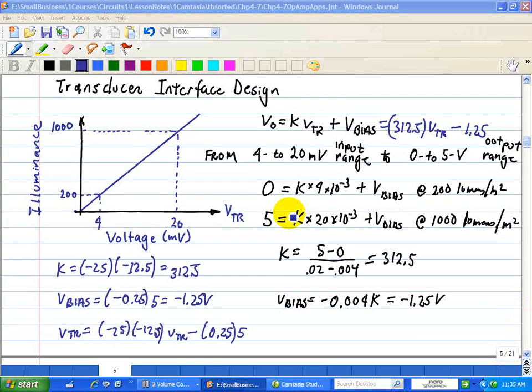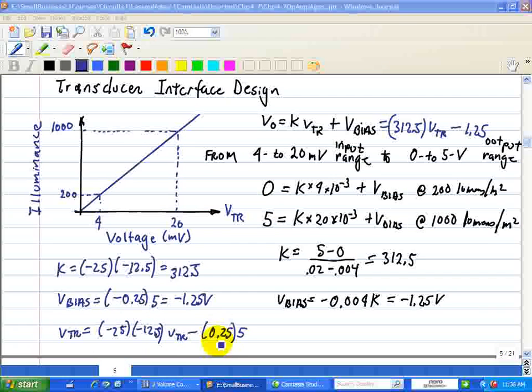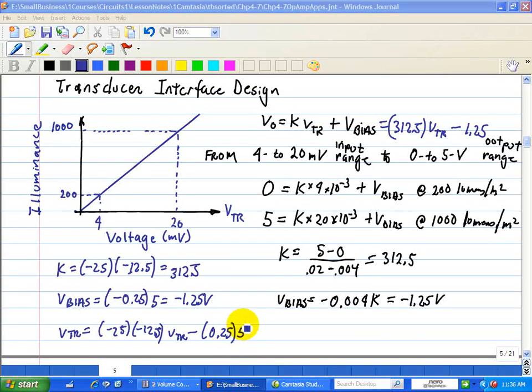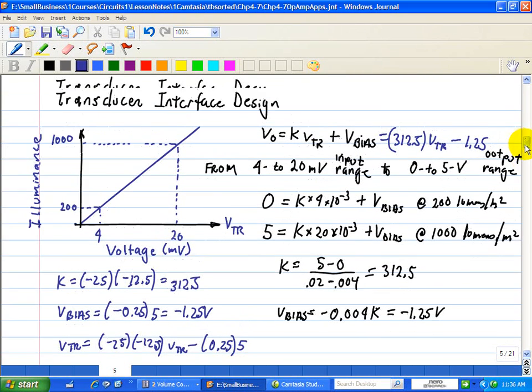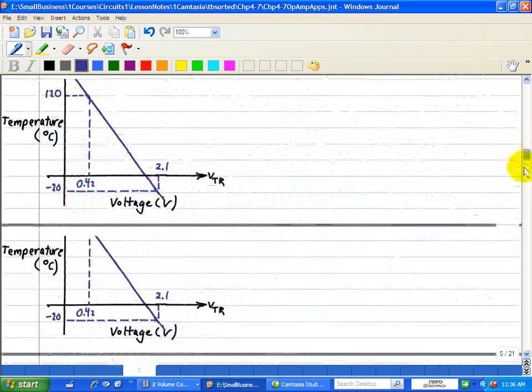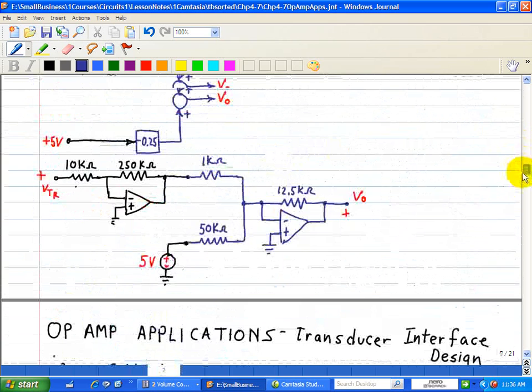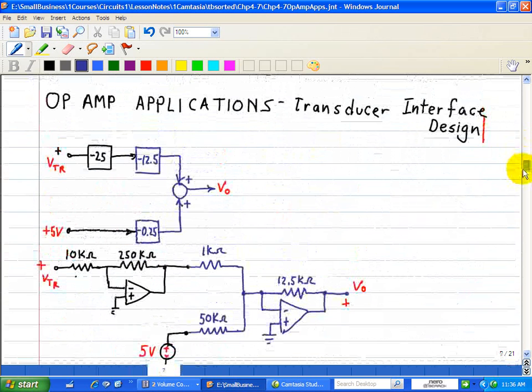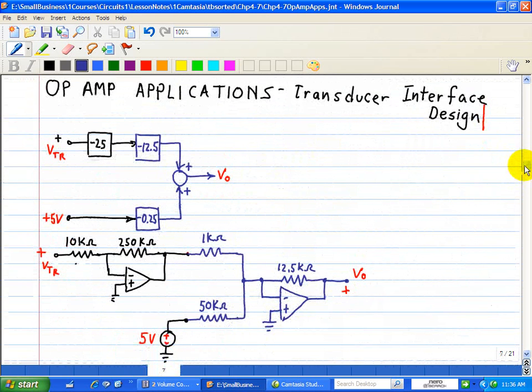So now we're going to implement this design equation where VTR equals negative 25 times negative 12.5 VTR, where VTR is the output of the transducer providing electrical signal, minus 0.25 times 5. We're going to implement that in terms of op-amps shown here.